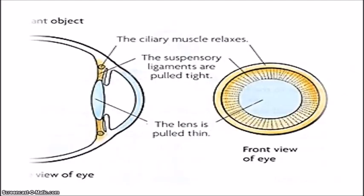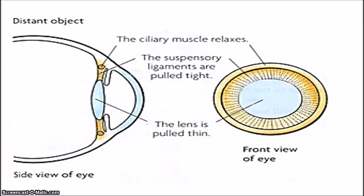So let's look at the other diagram here. We're seeing the side view and the front view. Here the ciliary muscles are relaxed, and that causes the suspensory ligaments to be pulled tight — you can see that the suspensory ligaments are more stretched out and pulled tight. The tightness of the suspensory ligaments pulls the lens thin, so we have a thinner lens, and less bending is required in order to focus the light rays onto the retina.